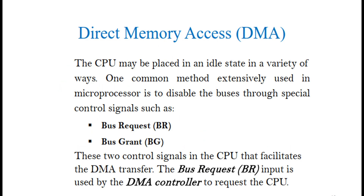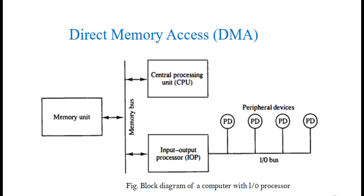DMA: The CPU may be placed in an idle state in a variety of ways. One common method extensively used in microprocessors is to disable the buses through special control signals such as Bus Request (BR) and Bus Grant (BG). These two control signals in the CPU facilitate the DMA transfer. The Bus Request (BR) input is used by the DMA controller to request the CPU.